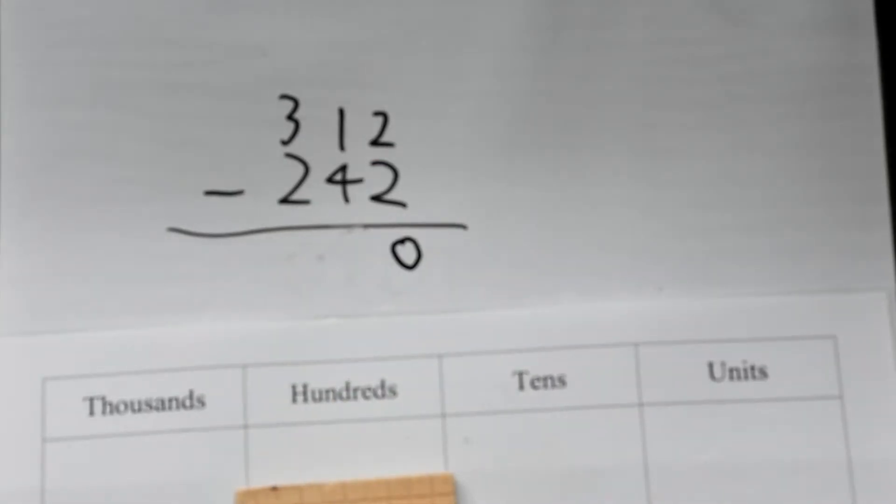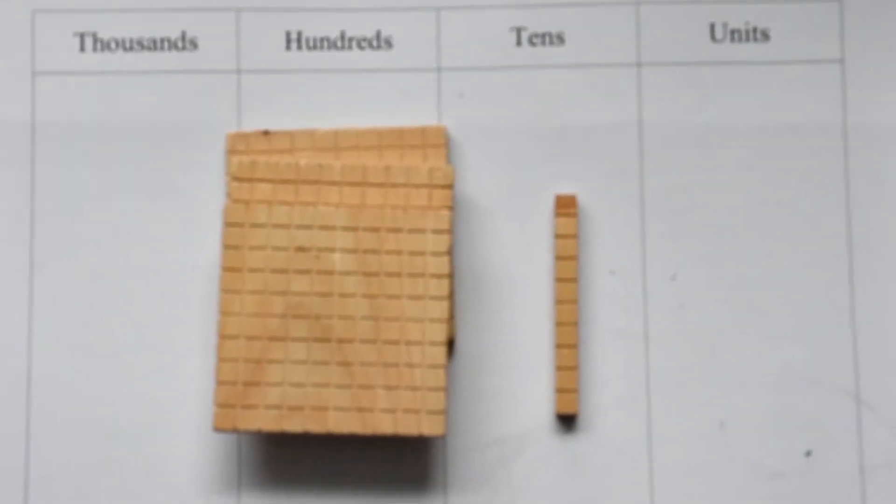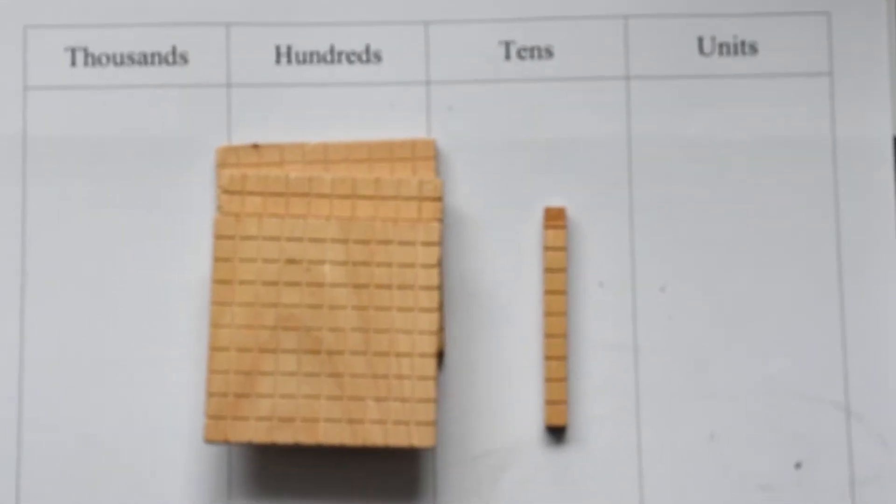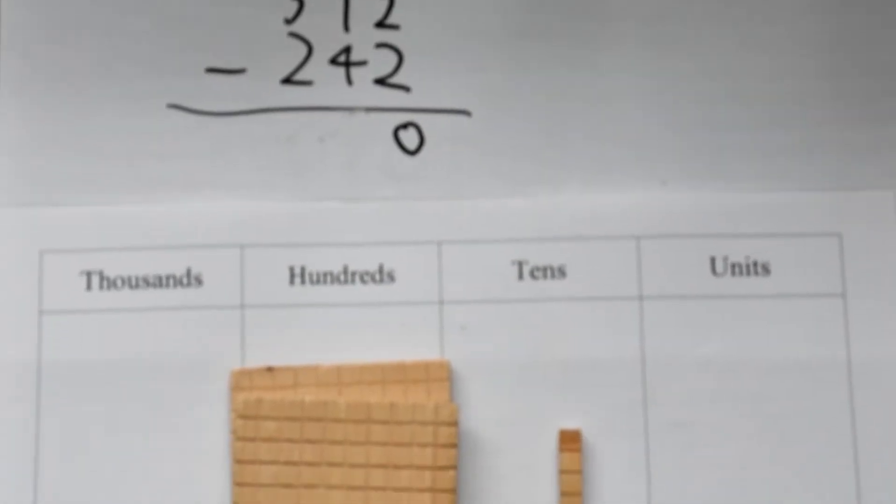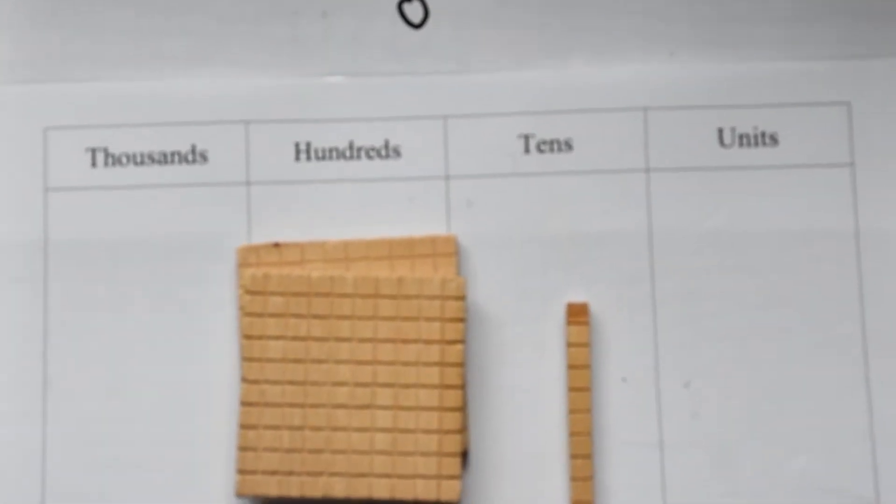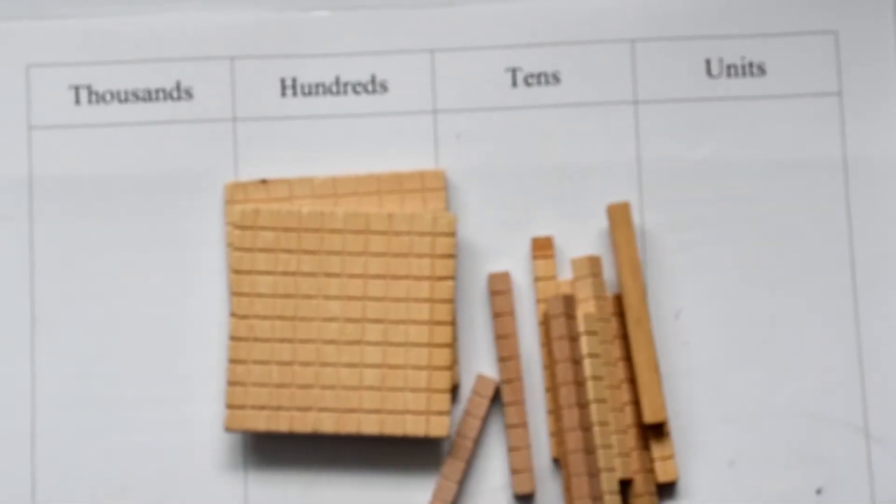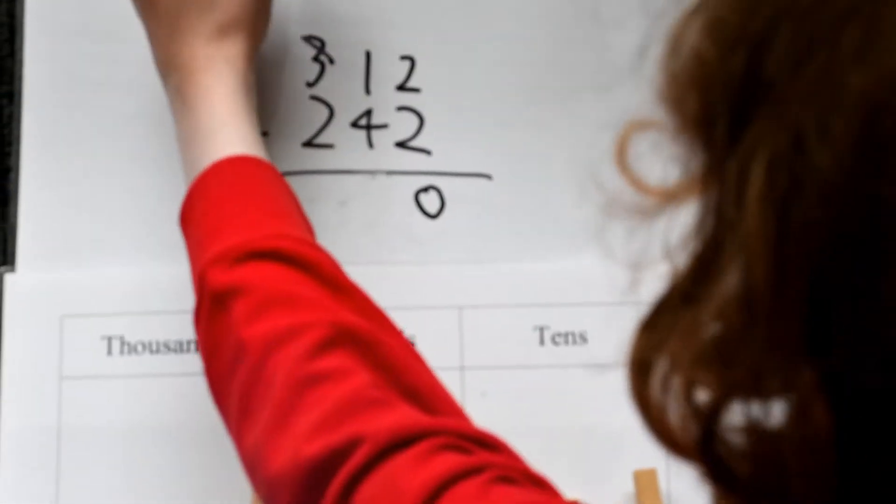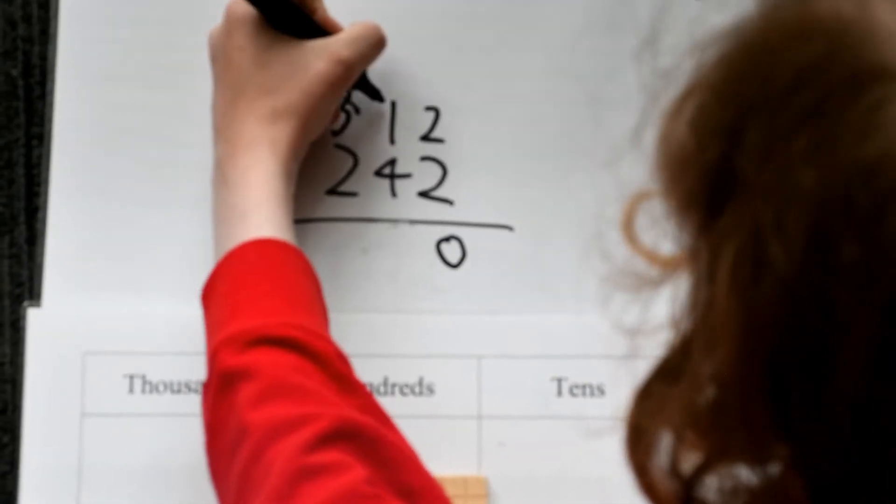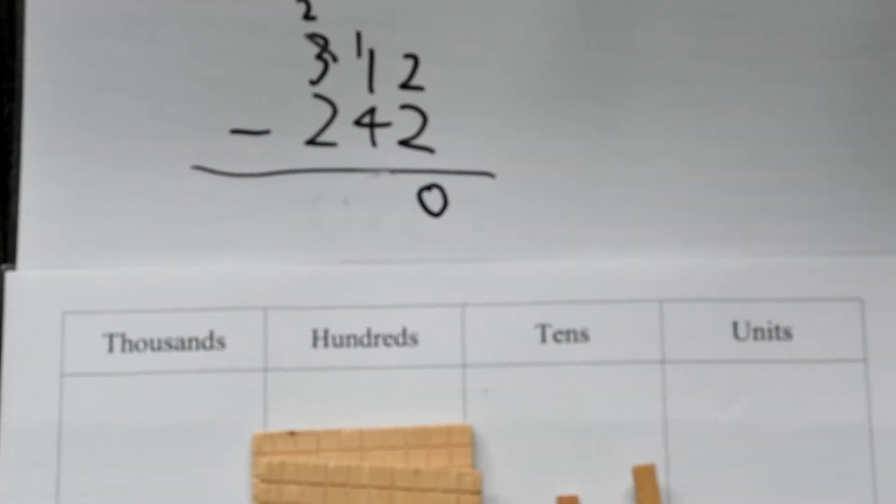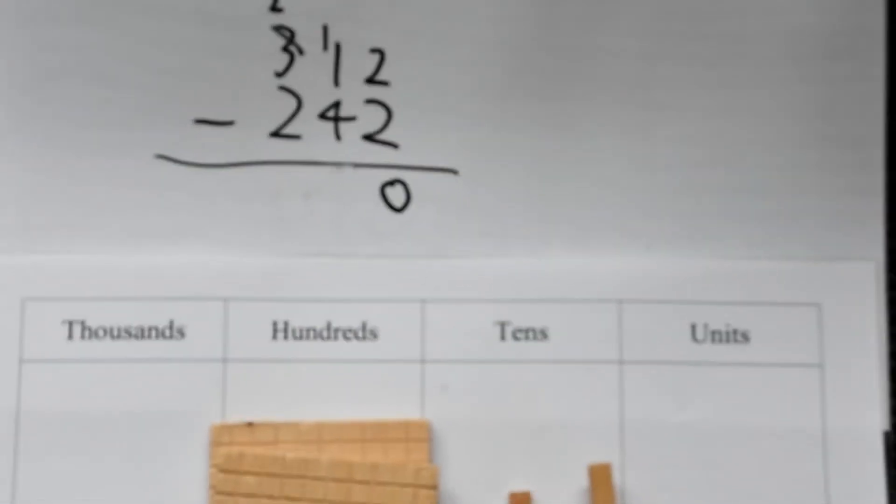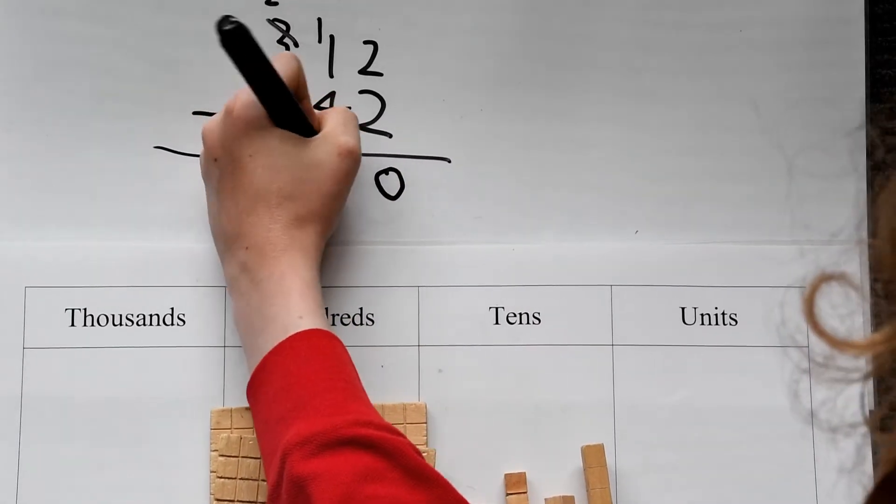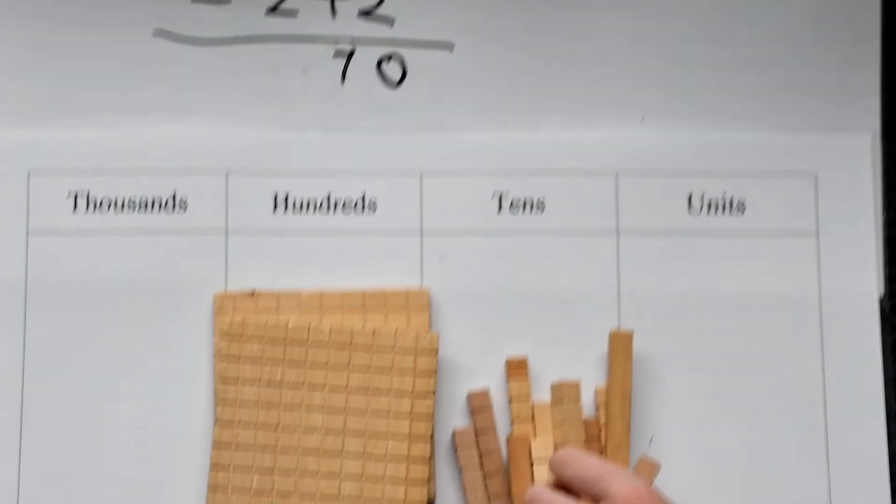We can then take away the units. Our next step is 1 minus 4. We cannot do this, so we have to take 1 of the hundreds and split it into tens. We now only have 200 and we have 11 tens. 11 minus 4 equals 7.